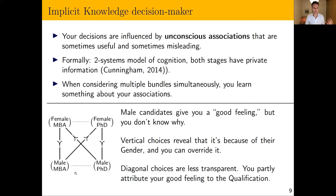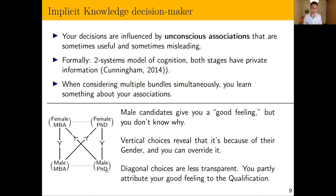In the vertical choices you can figure it out: you have a good feeling about the male candidate and the only thing special about him is that he's a man, so you override it because explicitly you prefer women. In the diagonal choices you have a good feeling about the man but don't know exactly what's driving it — maybe gender, maybe qualification — and since those feelings are often informative, you might go with it. This is a model in which these cycles can actually be rational.